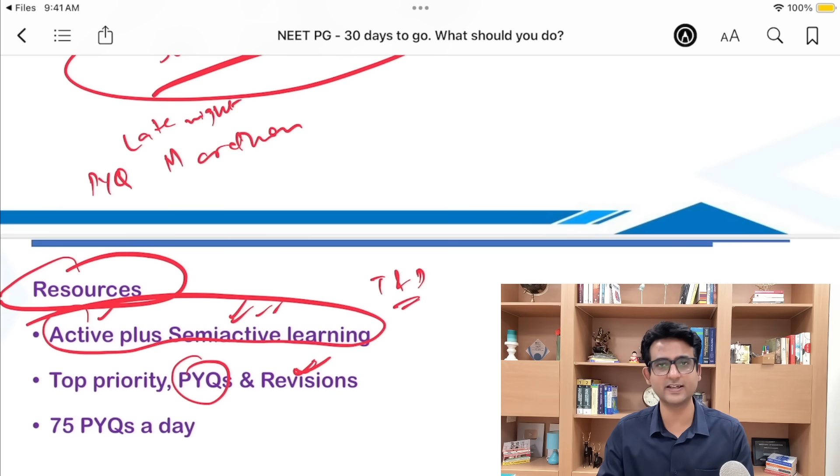Like in the INICET exam, a question came on SCOFF criteria last year. Now everybody thought it is a new question, but no, it is not a new question. SCOFF criteria has been asked by AIIMS in 2010. So the so-called new questions are often repeat questions from long back. Do this late night PYQ marathon. Do this, revise, do the PYQs. If you are not a Cerebellum student, if you have joined some other app, I am sure they must have given you PYQs. Do that.